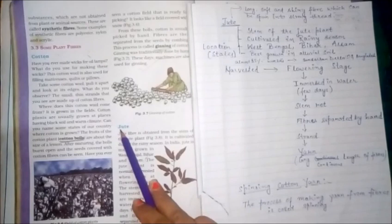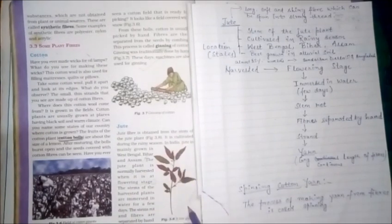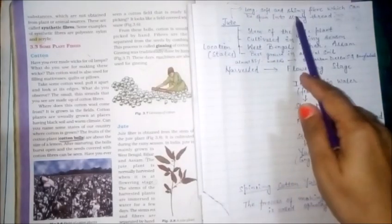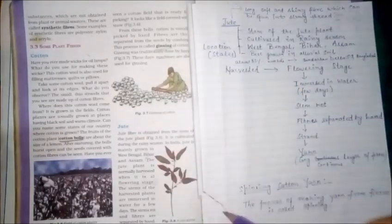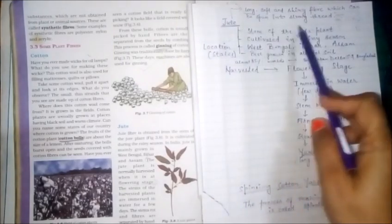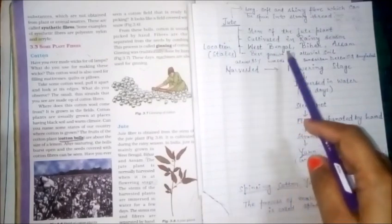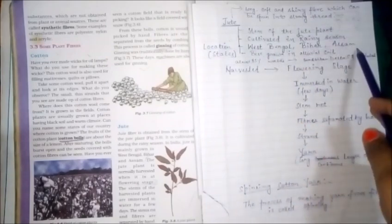Our next topic is jute. As you can see a jute plant in your book also, jute is a long, soft, and shiny fiber which can be spun into strong threads which are used at your home also. We can obtain jute fiber from the stem of the jute plant, and this jute is cultivated in rainy seasons.